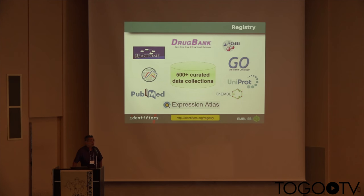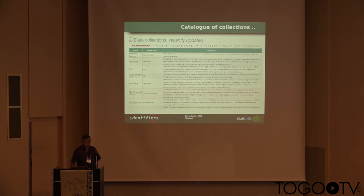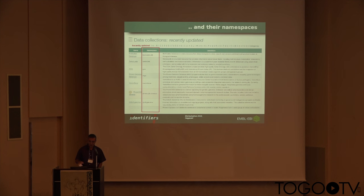We have a curated collection of over 500 datasets at the moment. Some of those are quite familiar to most of you — Gene Ontology, UniProt, ChEBI, ChEMBL, and so on. There's a link at the bottom where you can see the registry. If you go there, you can see on the left side the data collection name, on the right side a description, and we collect together the namespace. You can query that registry with keywords, or go by alphabetical category.